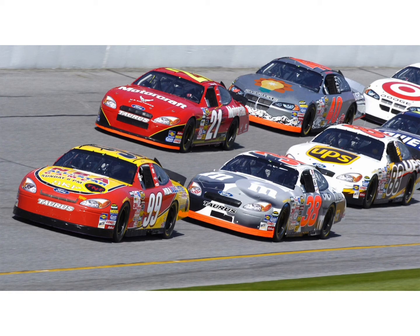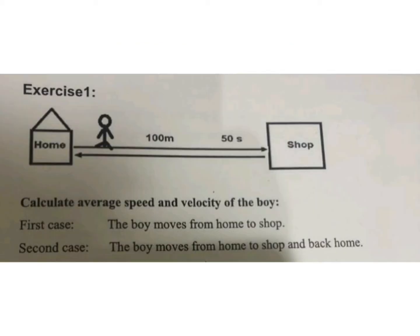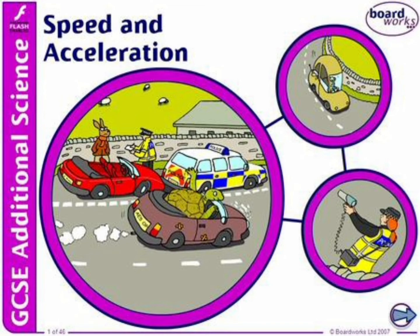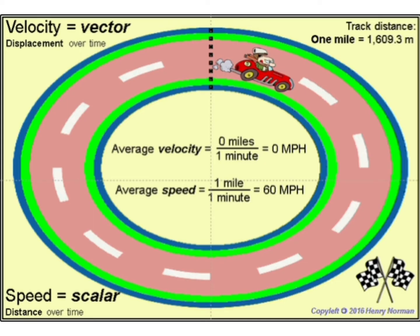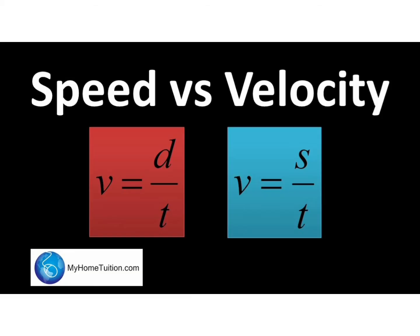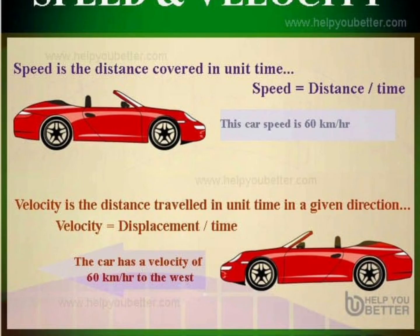We can see that the magnitude of speed and velocity of a moving body is equal only if the body moves in a single straight line. If a body does not move in a single straight line, then the speed and velocity of the body are not equal. When the body moves in a straight line, speed and velocity will be equal.